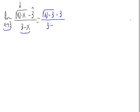Substituting, we have the square root of 12 minus 3 divided by 3 minus 3. So this is the square root of 9, that is 3 minus 3, divided by 0. And we have 0 divided by 0.